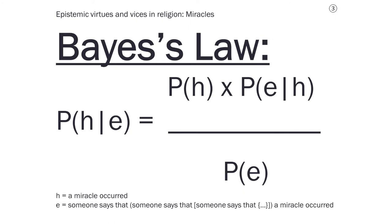So let's think about this in the context of miracles. If H, the hypothesis, is that a miracle occurred, then we can let E, the evidence, be either someone says that a miracle occurred, or someone says that someone says that a miracle occurred, or someone says that someone says that someone says that a miracle occurred, and so on. This represents the number of conduits that the testimony has passed through from the original source to us.